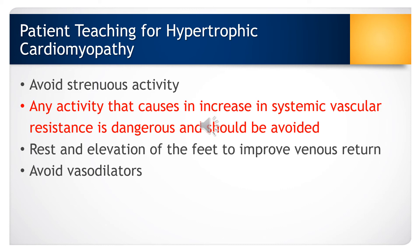For patients with hypertrophic cardiomyopathy, teaching should focus on helping patients avoid strenuous activities and dehydration. Any activity that can cause an increase in systemic vascular resistance is dangerous and should be avoided. Rest and elevation of the feet to improve venous return can help manage chest pain. Vasodilators such as nitroglycerin may worsen chest pain by decreasing venous return and further increasing obstruction of blood flow from the heart.